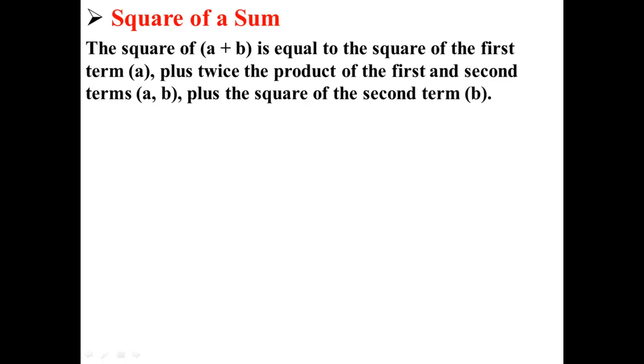Let's talk about the square of a sum. The square of the sum a plus b is equal to the square of the first term a, plus twice the product of the first and second terms a and b, plus the square of the second term b.